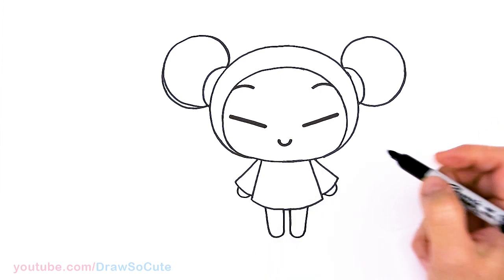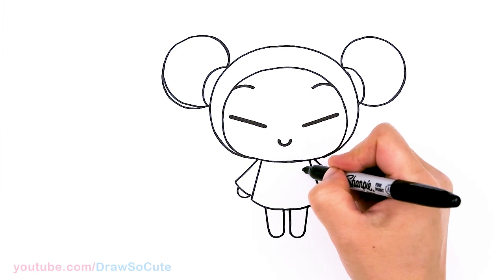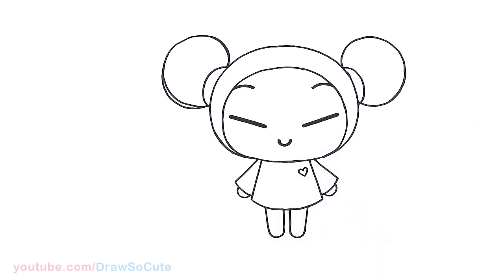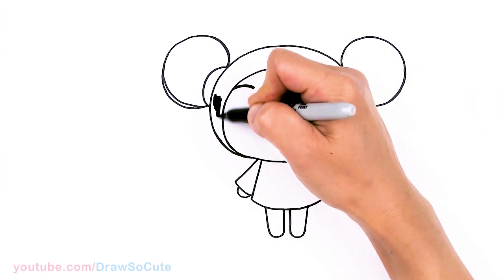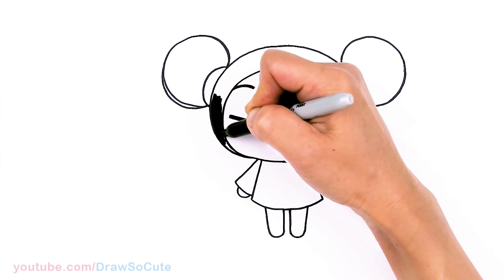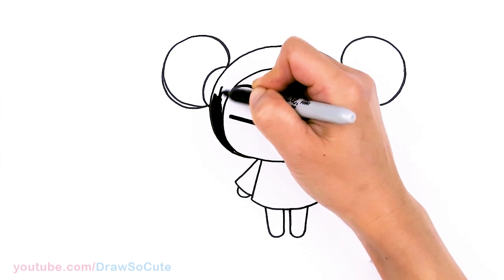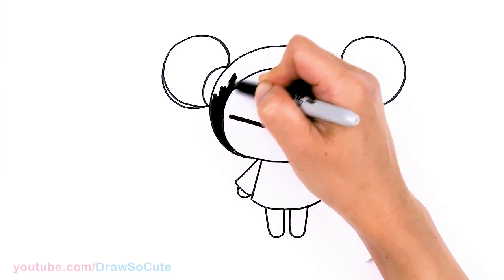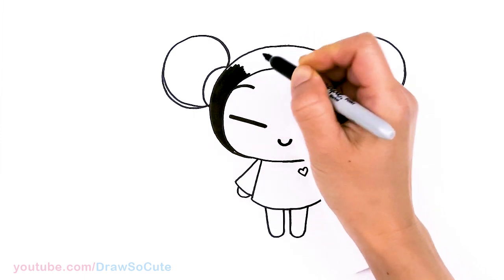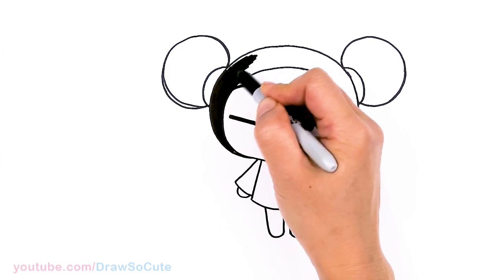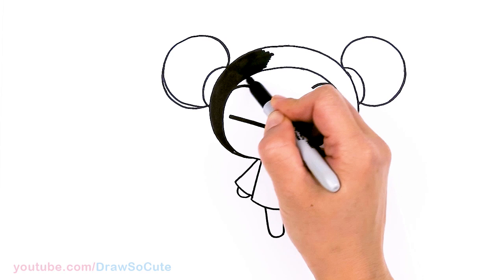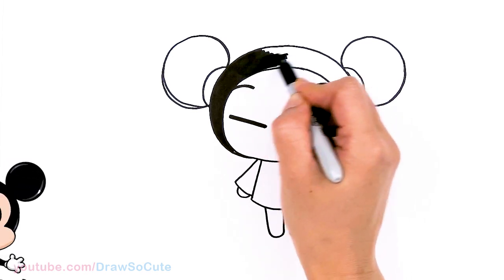And that is pretty much it, except of course I'm going to put a little heart right here for Pucca. Let me just come in here and shade this in all black so you can see a little bit better. And definitely let me know in the comments below if there's other characters you want me to draw from this cute little show right here.